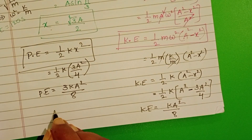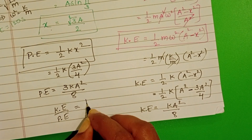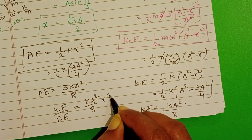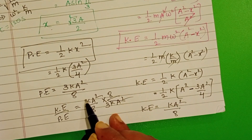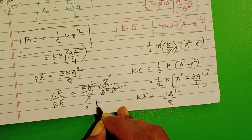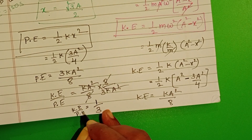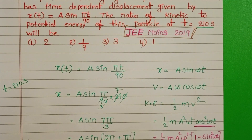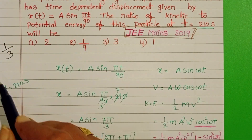Now take the ratio. Kinetic energy by potential energy = (kA²/8) ÷ (3kA²/8). The kA² and 8 all cancel. So the ratio of kinetic energy to potential energy is 1/3. However, in the given options there is no 1/3. Actually this question is from a score test. The answer is 1/3.